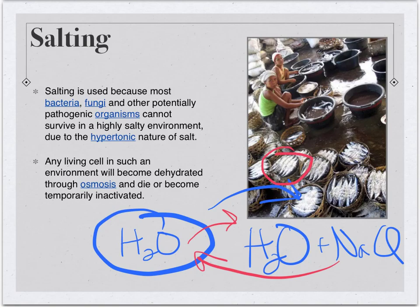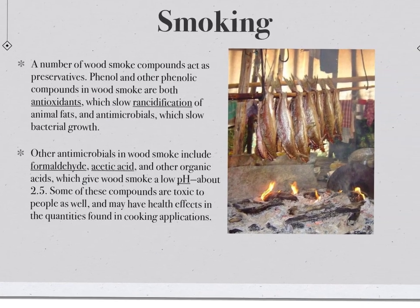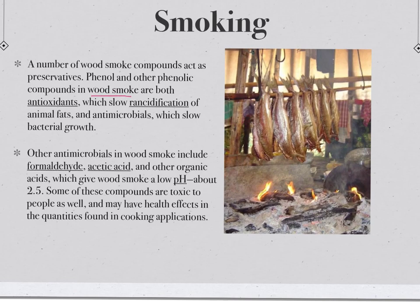Smoking is perhaps the most surprising preservation method. It works due to the antioxidants present in wood smoke — compounds that reduce oxidation of the fats in food. These compounds also lower the pH of the fats, inhibiting bacterial growth. However, it's noted that these wood smoke compounds can be toxic to people if consumed in very large quantities.